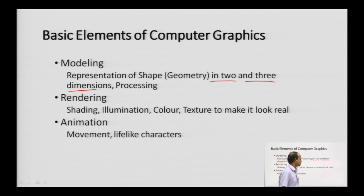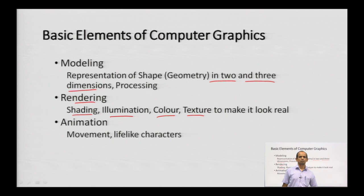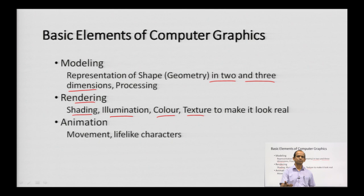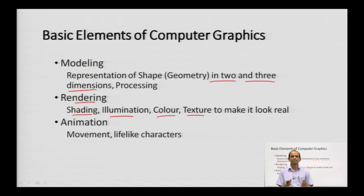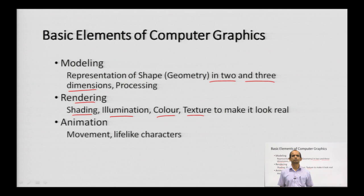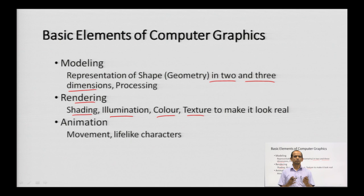Rendering employs shading, illumination, adding color, and adding texture to make a model look like a real object. If you have a 3D model, you can add shades — for example, a front part can be illuminated and the rear part shaded to create a shadow. You can add color and texture; for instance, when communicating a house design to a customer, you can add colors to walls and textures in various parts.